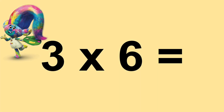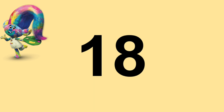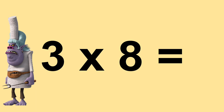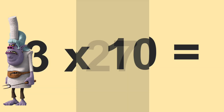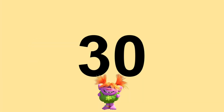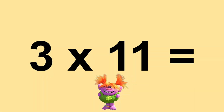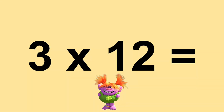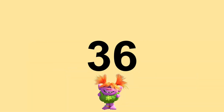Three times six equals eighteen. Three times seven equals twenty-one. Three times nine equals twenty-seven. Three times ten equals thirty. Three times eleven equals thirty-three. Three times twelve equals thirty-six.